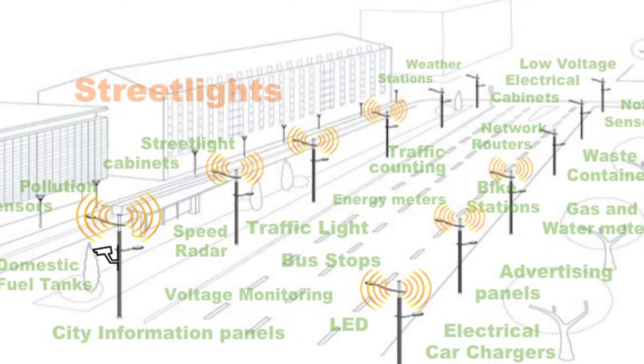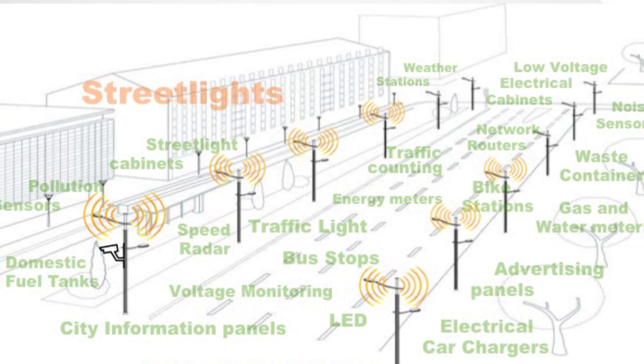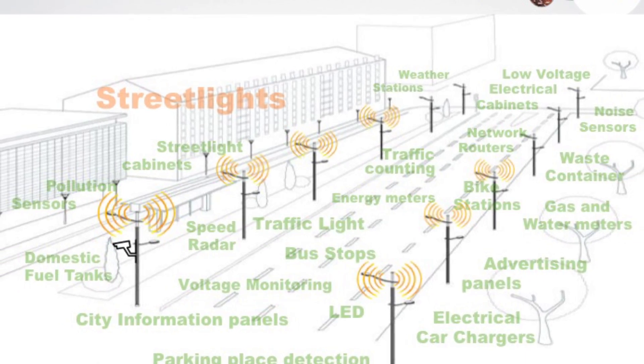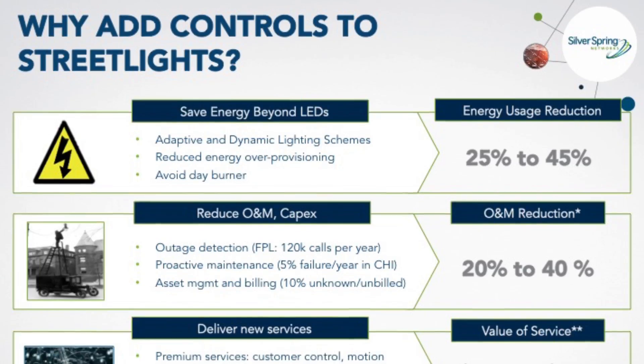Hi, I'm Tom Merrick with Silver Spring Networks. I want to talk to you today about our smart cities and smart streetlights demonstration. Using the multipurpose network, utilities can add additional applications to the network that lets them do things like controlling streetlights.